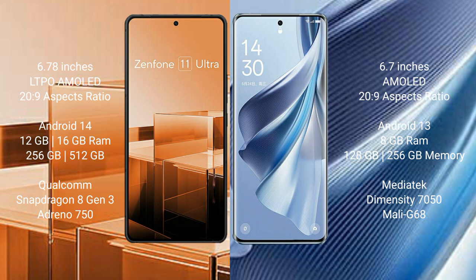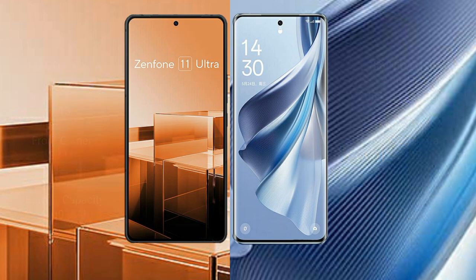Asus Zenfone 11 Ultra comes with 12GB, 16GB RAM and 256GB, 512GB internal storage, Qualcomm Snapdragon 8 Gen 3 processor and GPU Adreno 750. Oppo Reno 10 comes with 8GB RAM and 128GB, 256GB internal storage, MediaTek Dimensity 7050 processor and GPU Mali-G68.